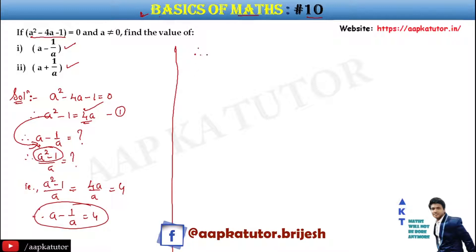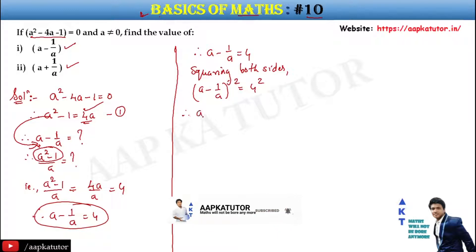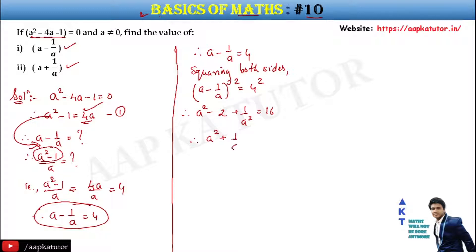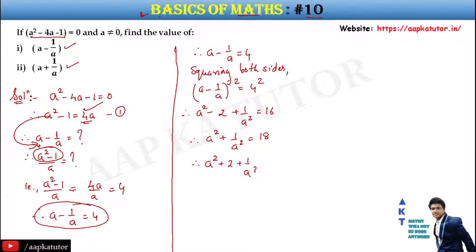Now we'll use a minus 1 upon a equals 4 and square both sides. So a minus 1 upon a, whole squared, equals 4 squared, giving a squared minus 2 plus 1 upon a squared equals 16. Therefore, a squared plus 1 upon a squared equals 18.